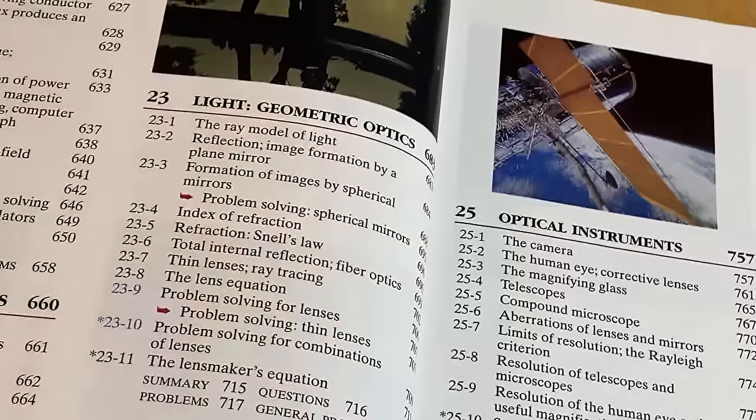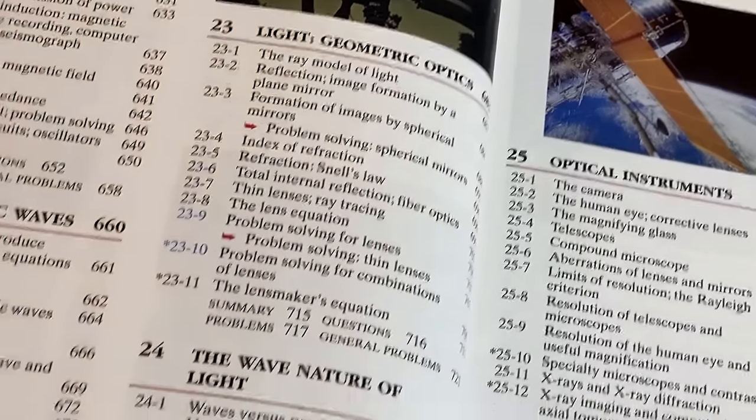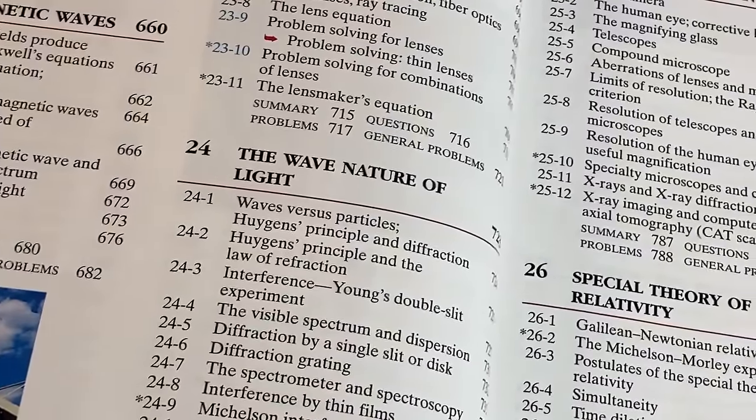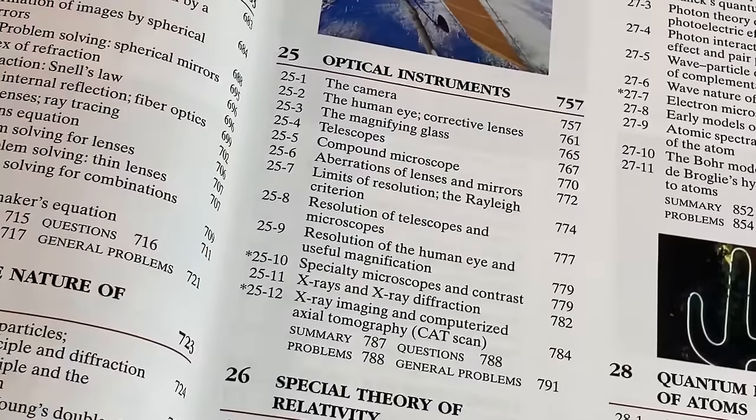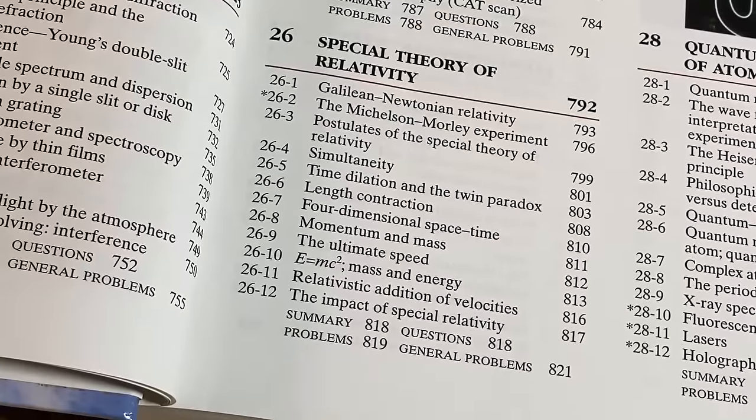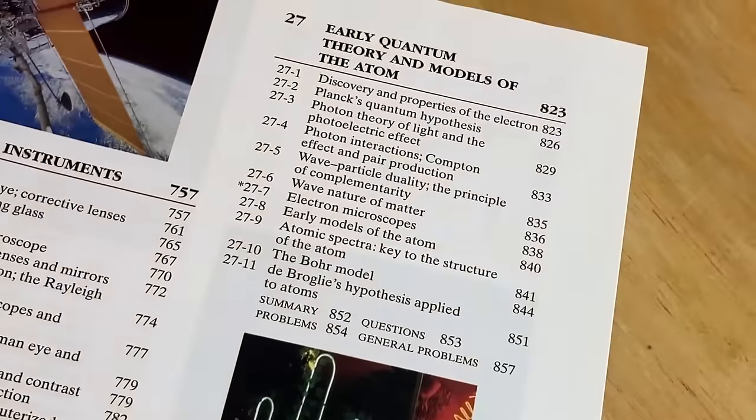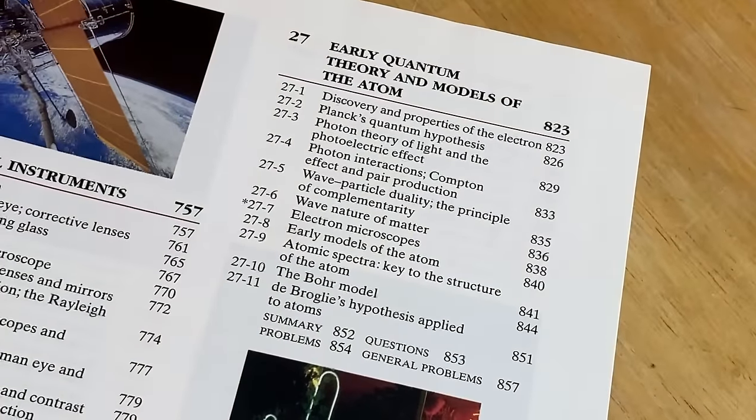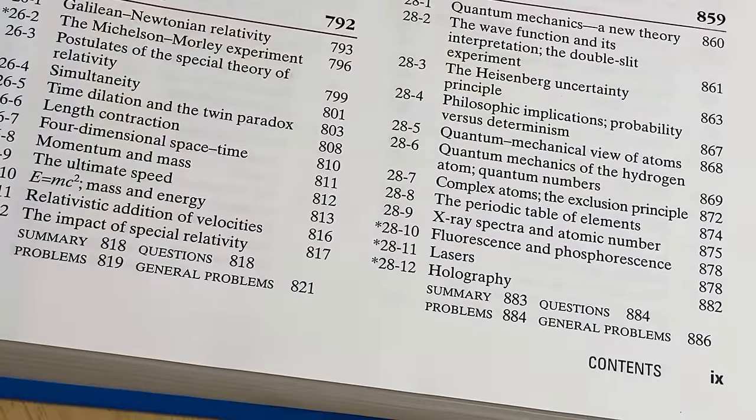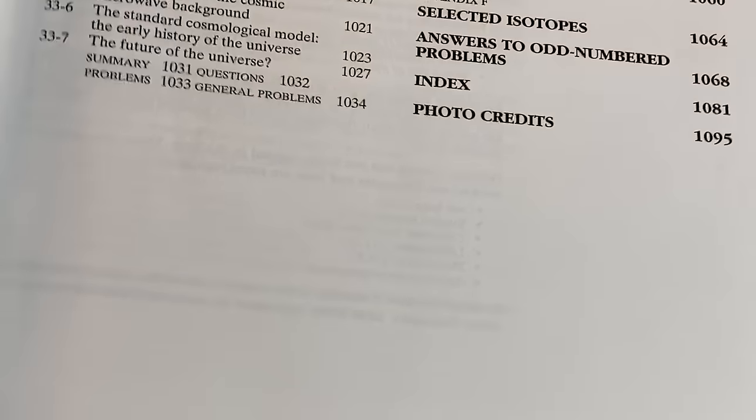I actually have some of Faraday's books. Light, geometric optics. The wave nature of light. You see it's just a super thick book here. Optical instruments. Special theory of relativity. Then early quantum theory and models of the atom. Quantum mechanics of atoms. You can see it has a lot - it keeps going, there's more. It's just so much, so much knowledge in here.